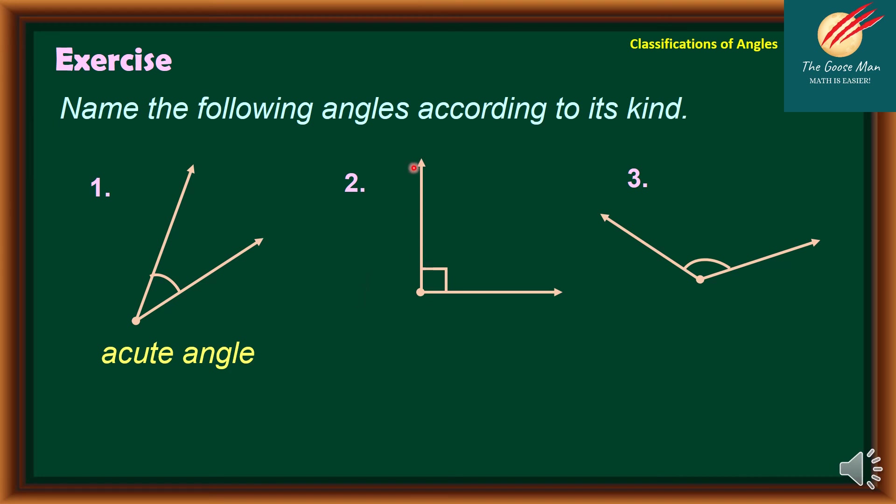In number two, as we can see here, a small square. It means it is a right angle. These angles measure exactly 90 degrees by the given. Therefore, this is a right angle.